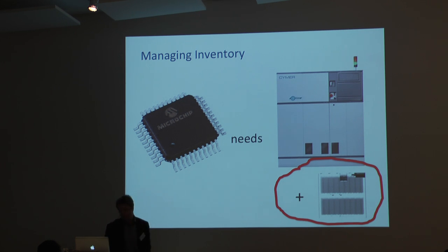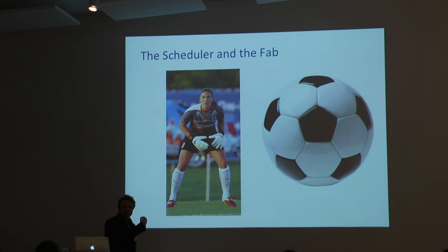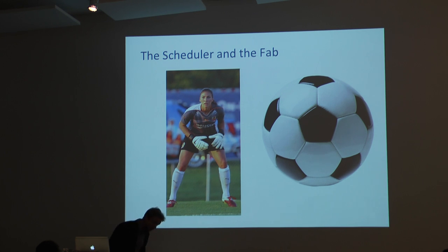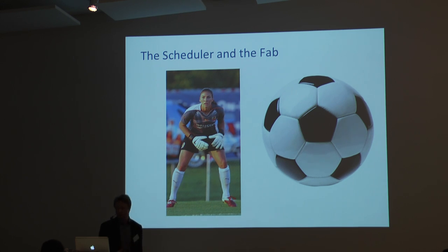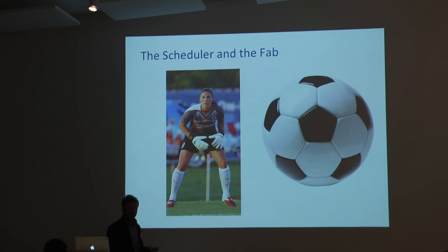It's sort of like a penalty kick. The goalkeeper — this is Hope Solo, goalkeeper of the American national football team — needs to pick a corner before the ball leaves the foot of the penalty kicker. That's kind of what we need to do: we need to guess what the fab is actually going to do in response to the instructions we issue to it. When you jump to a certain corner or perform a certain action in the fab, you hope that the ball is actually going to go there and not the other corner. That analogy got us thinking about the notion of 'hope' in the fab.